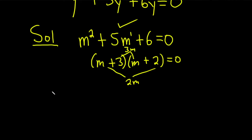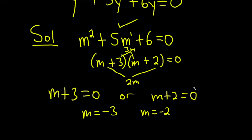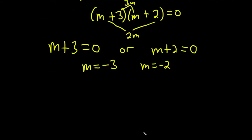Whenever you have a product equal to 0, you set each factor equal to 0. And here we have m plus 3 equals 0, so we get m equals negative 3. And here m plus 2 equals 0, so we get m equals negative 2. And we have the case which is distinct real roots.